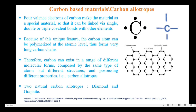Let us start with carbon allotropes or carbon based materials. Carbon has four valence electrons. The four valence electrons of carbon make them into a special material, so it can be linked with other elements by single, double, or triple covalent bonds. Because of this unique feature, the carbon atom can be polymerized at the atomic level, thus forming very long carbon chains.